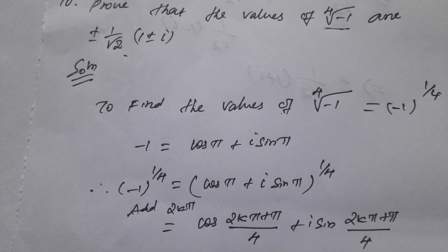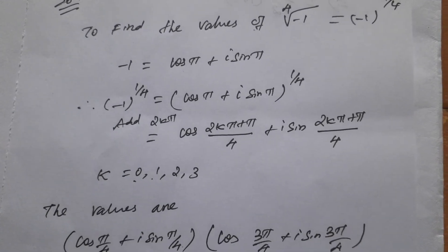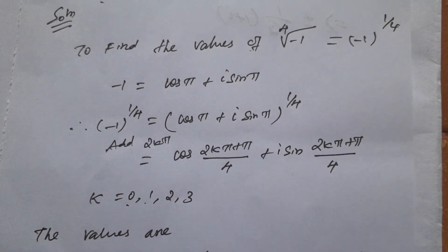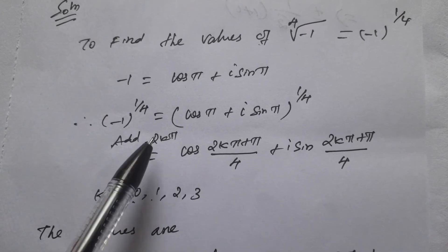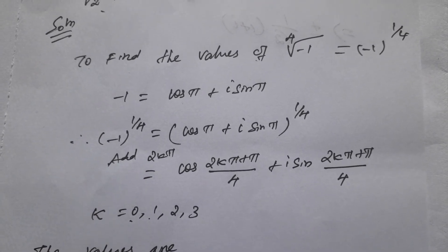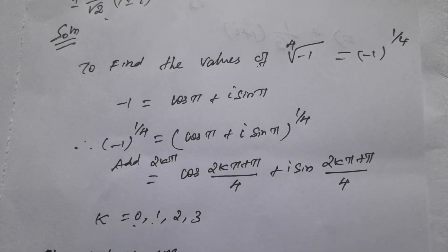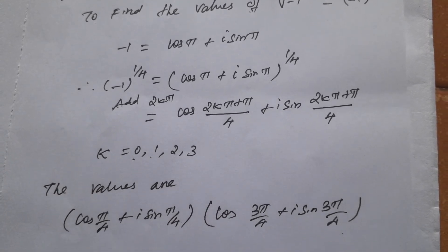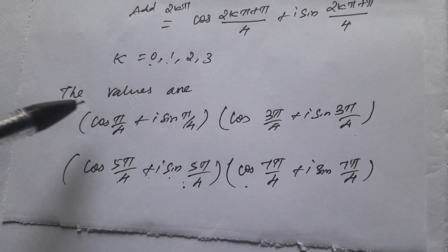So 4th root of minus 1, so minus 1 the whole power 1 by 4. Minus 1 is equal to cos π plus i sin π. So now we need to add 2k π. Add the values: 0, 1, 2, 3. So now we need to apply the values, but we need to stop. So we need to prove that.